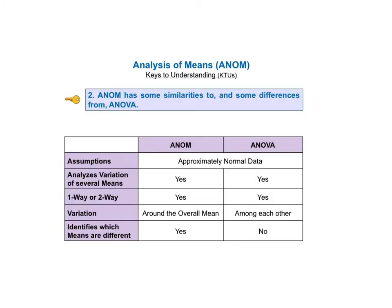Key to understanding number two: ANOM has some similarities to and some differences from ANOVA. Similarities: they both require that the data be distributed approximately normally; they both analyze variation of several means; both are usually used with three or more means — for two means there is the two-sample t-test; and both can perform one-way analyses with one x variable, or two-way analyses with two x variables. But they differ in how they measure variation, as explained in the following slides. And as noted in KTU number one, ANOM can identify which means are different, while ANOVA cannot.